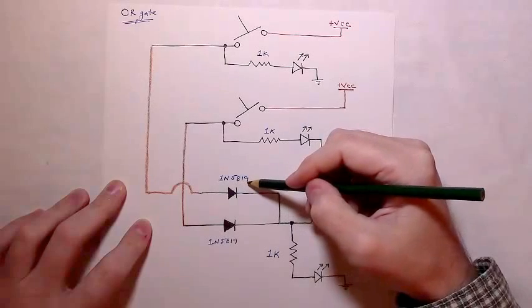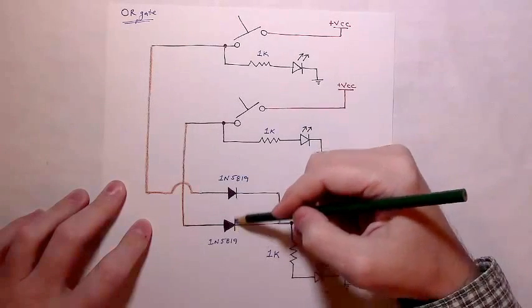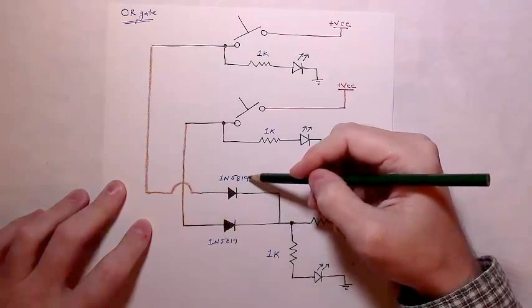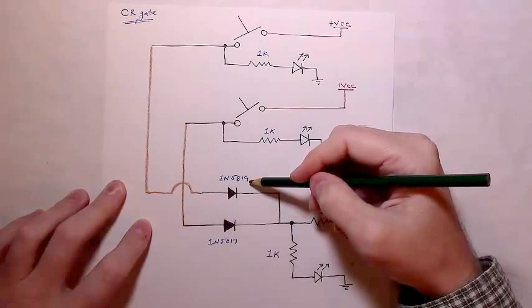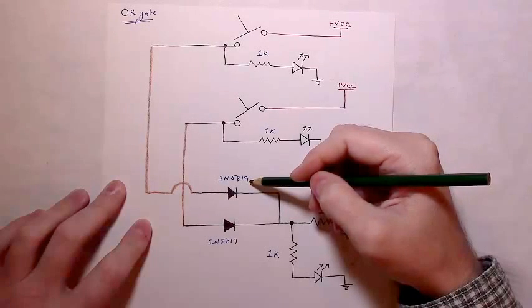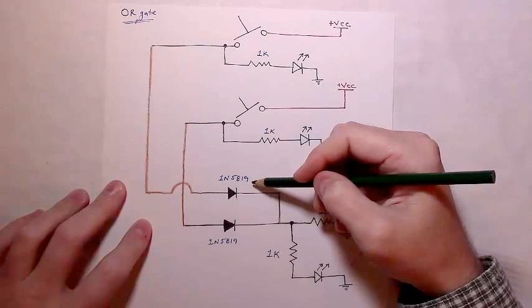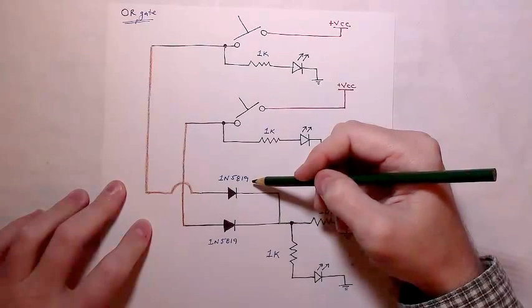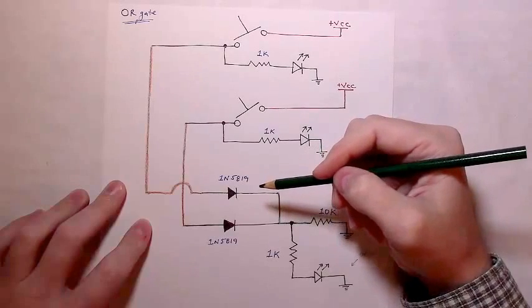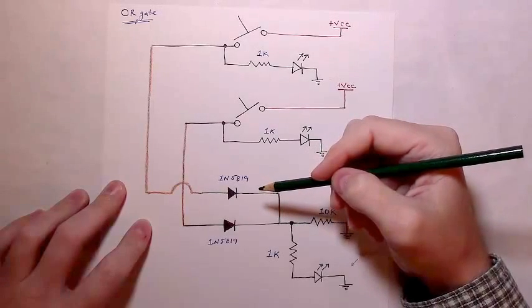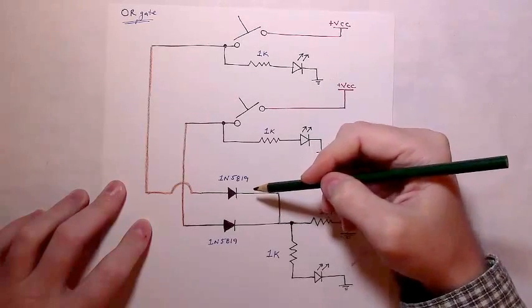I'll be using a 1N5819, a Schottky style, two Schottky style diodes, but you could just as well use a 1N4001, or that'd be a normal rectifier diode, or you could use a 1N4148 small signal diode. Any diode of those sorts, signal, rectifier, or Schottky will work, no problem.